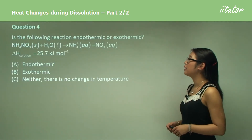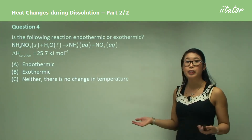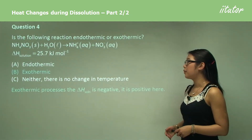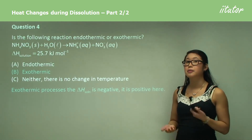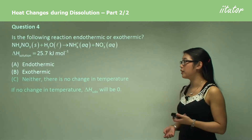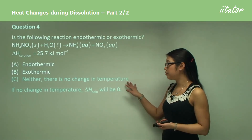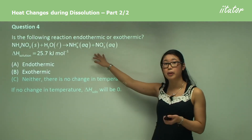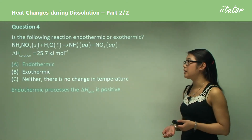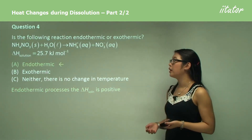Question four: is the following reaction endothermic or exothermic? We don't really need the equation for this question — we're just looking at the delta H number. In an exothermic process, the delta H is negative, but in this case it's positive, so exothermic is incorrect. With delta H equal to zero, that means no change in enthalpy, but we have a positive number here, so that's also incorrect. This process is endothermic because endothermic processes have a positive delta H, so A is correct.